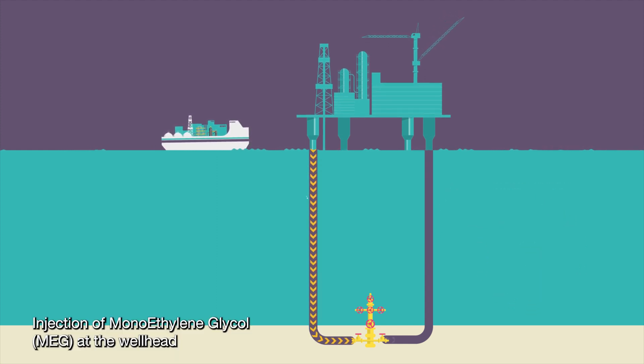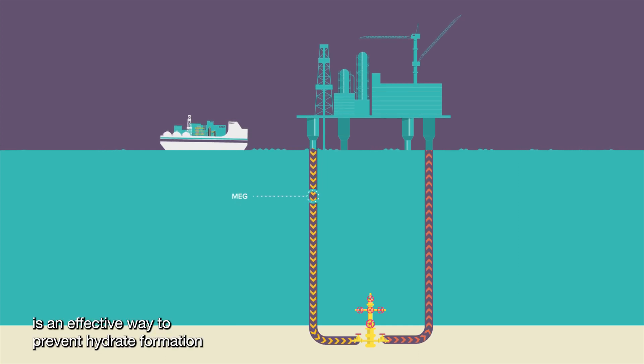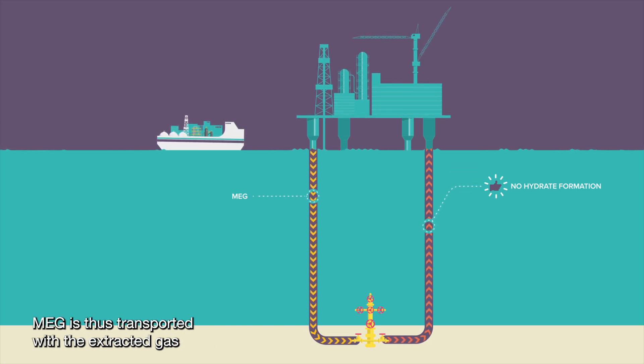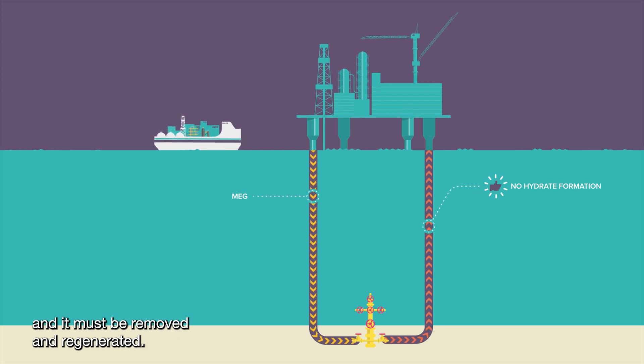Injection of monoethylene glycol, MEG, at the wellhead is an effective way to prevent hydrate formation and guarantee gas flow and continuous production. MEG is thus transported with the extracted gas and it must be removed and regenerated.